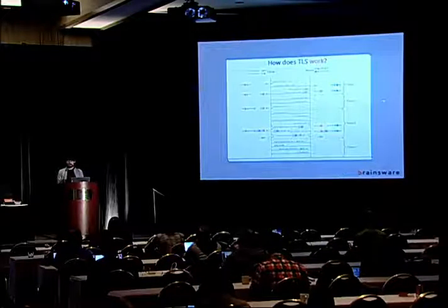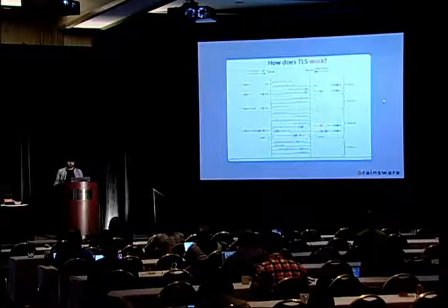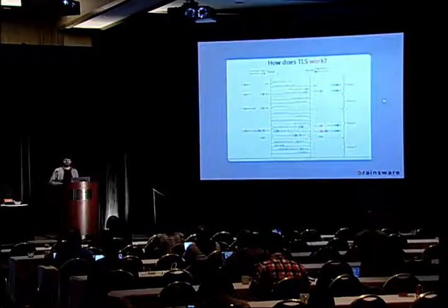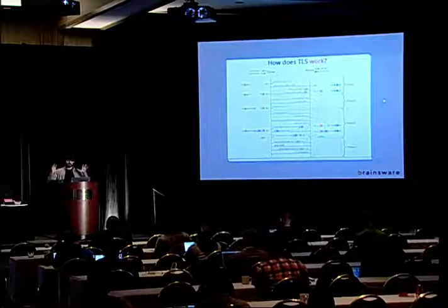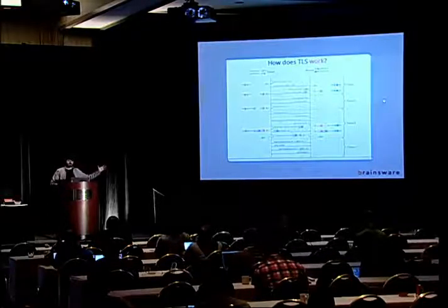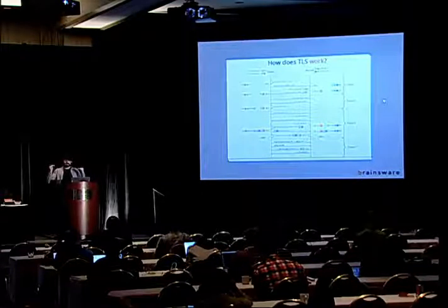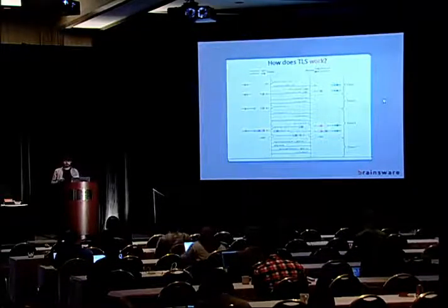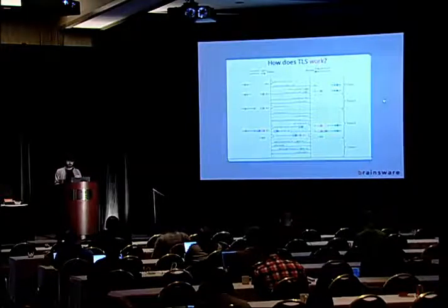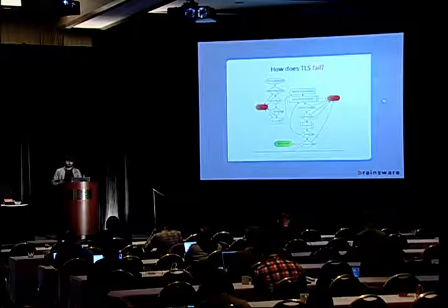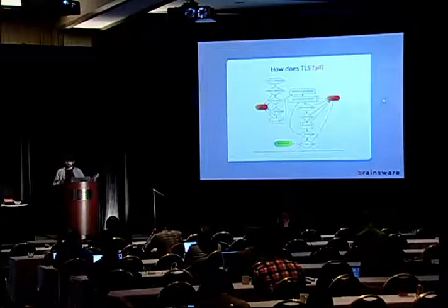I hope I've managed to convey that the basic principle of TLS is actually quite simple. We have big random numbers, and by doing the appropriate steps in the appropriate order, we establish a secure channel. So the question is: how does TLS fail? What's wrong? Why do I think something is wrong?